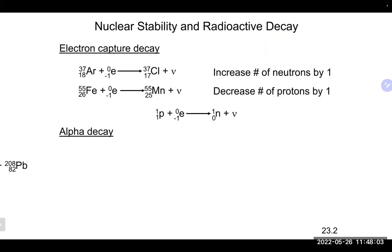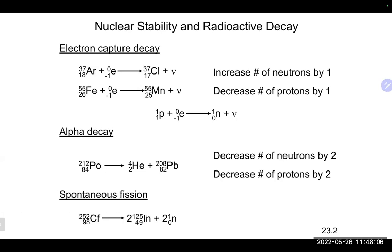Electron capture appears on the reactant side—the nucleus grabs an electron. A proton plus an electron: the bottom numbers cancel to give 1 and 0, which is a neutron. Alpha decay can be written using helium (since it really is a helium nucleus) or the alpha symbol. Alpha decay produces the biggest change: the atomic number decreases by 2 and the mass number decreases by 4.